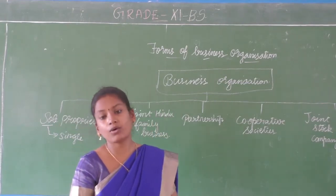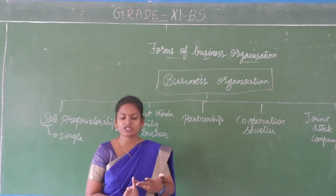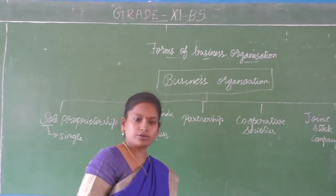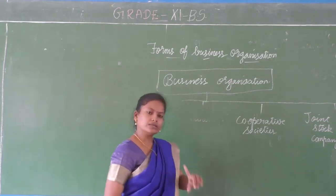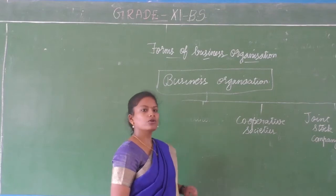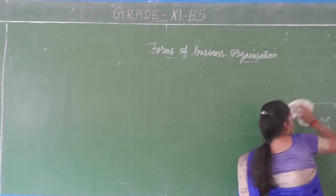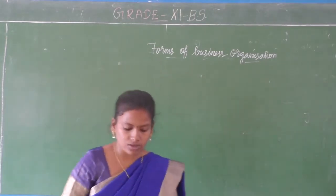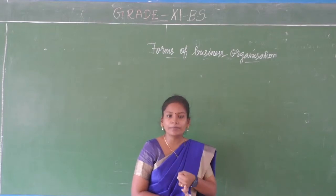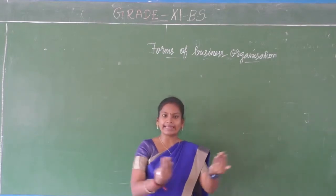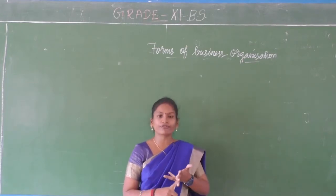We are going to deal in detail with the advantages and limitations of sole proprietorship. But before we go into advantages and limitations, we should know the features of sole proprietorship. The person who runs that particular organization all alone is called a sole proprietor or a sole trader. In case of trades he is called a sole trader. Sole trader is defined as a form of business organization where only one person, only one owner, is responsible for the entire business - he alone takes the risk.